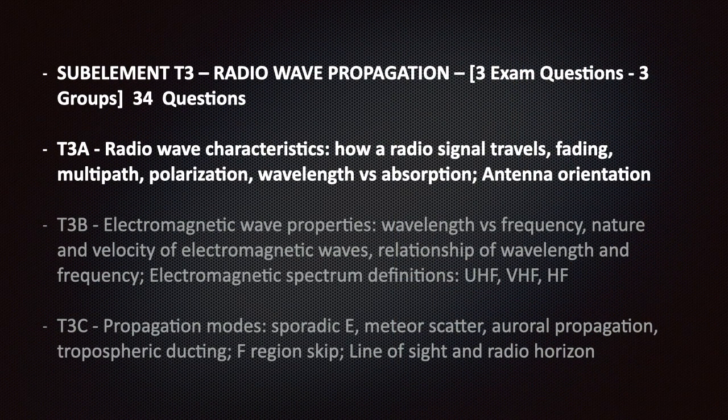The T3 section covers radio wave propagation. On your exam, three questions are selected at random from this sub-element. There are three groups with a total of 34 questions. This video covers the first group, T3A: radio wave characteristics — how a radio signal travels, fading, multi-path, and polarization.